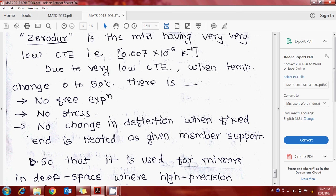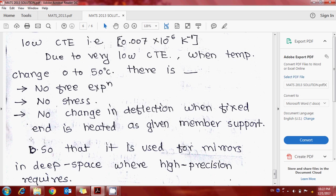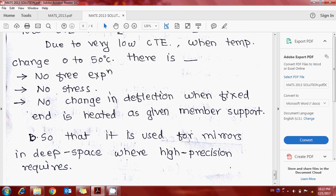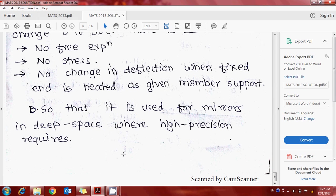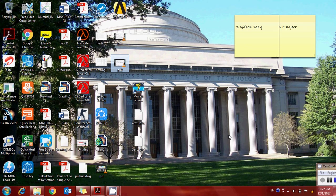The deflection delta 2 is more than delta 1 because the length L plus delta L2 is more than length L plus delta L1. Now go to the last solution for a material having zero coefficient of thermal expansion.